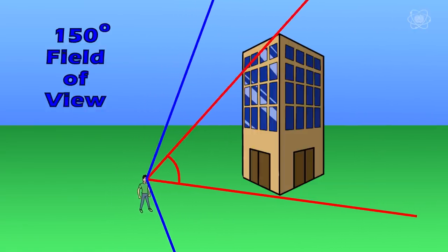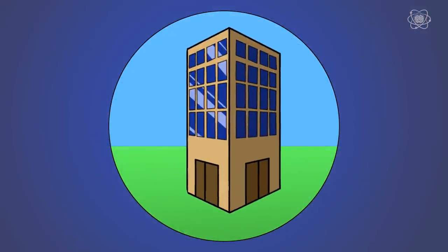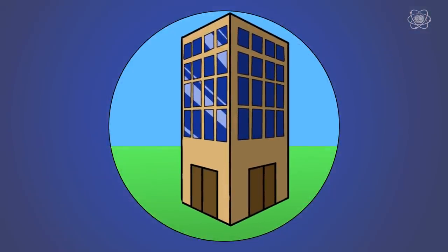As you move closer, the viewing angle of this building grows. Your brain interprets this larger percentage of your field of view being taken up means that this object is either larger or it must be closer.